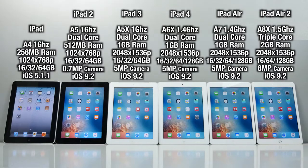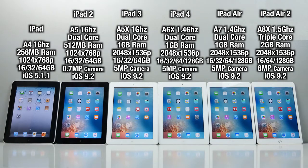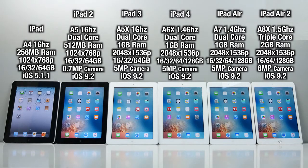Looking at the specs, take a look at the original iPad — 256 megabytes of RAM, just one gigahertz processor, the same one found in the iPhone 4. And look how far we've come to the iPad Air 2: two gigabytes of RAM, that's eight times more than the original iPad. We've got the A8X. The iPad Air 3 wasn't released this year — let's hope for next year. iOS 9.1 is current at the time of making this video, and 9.2 is very soon on the horizon.